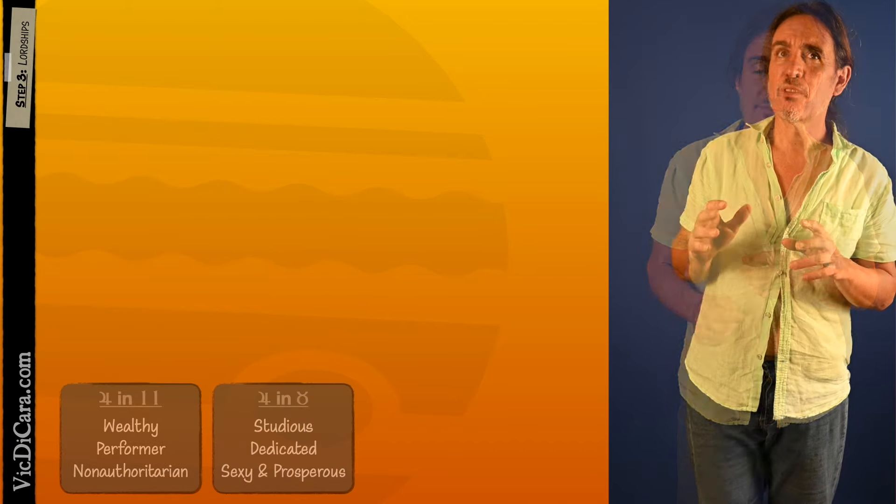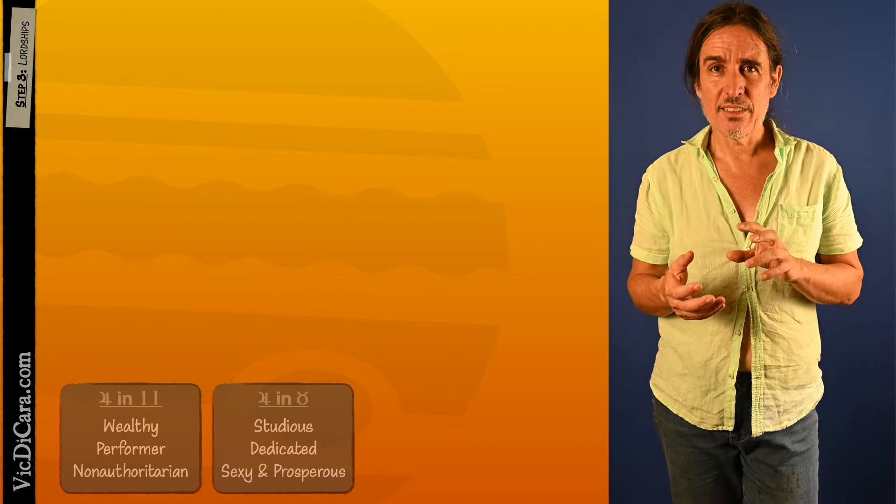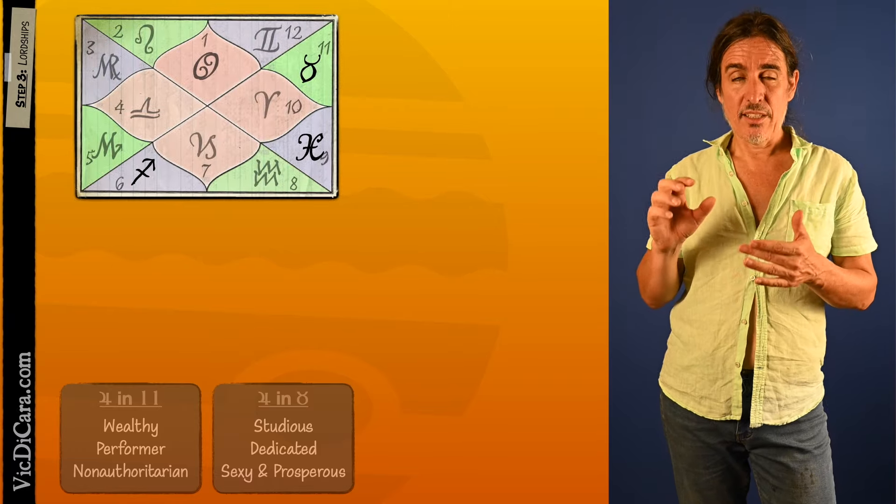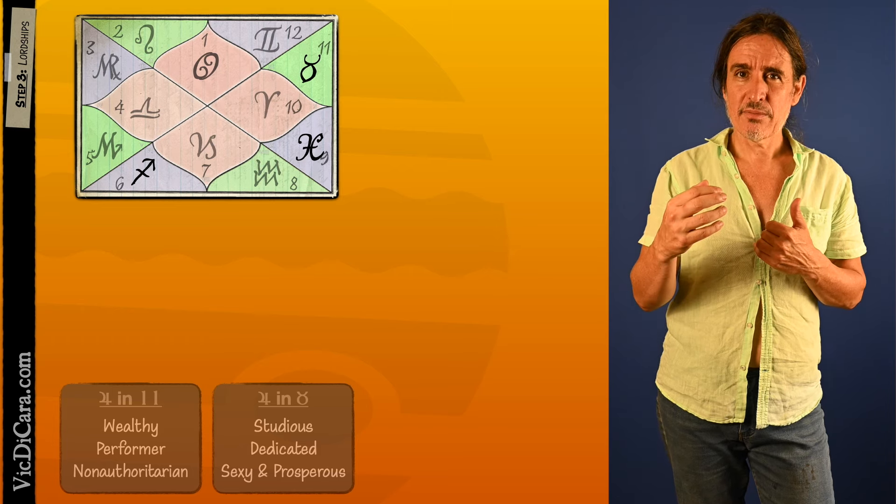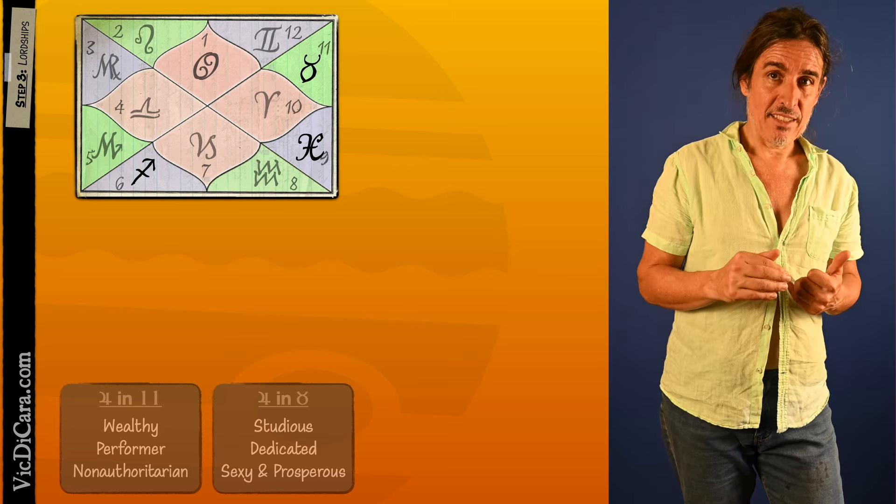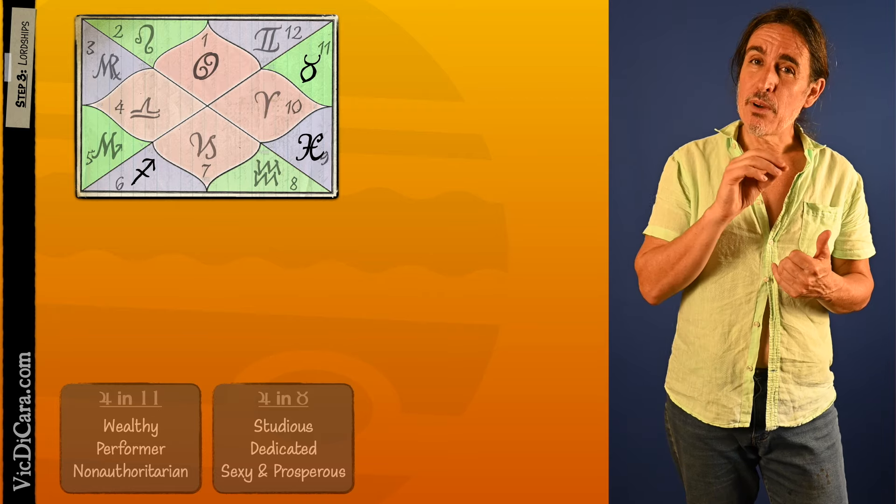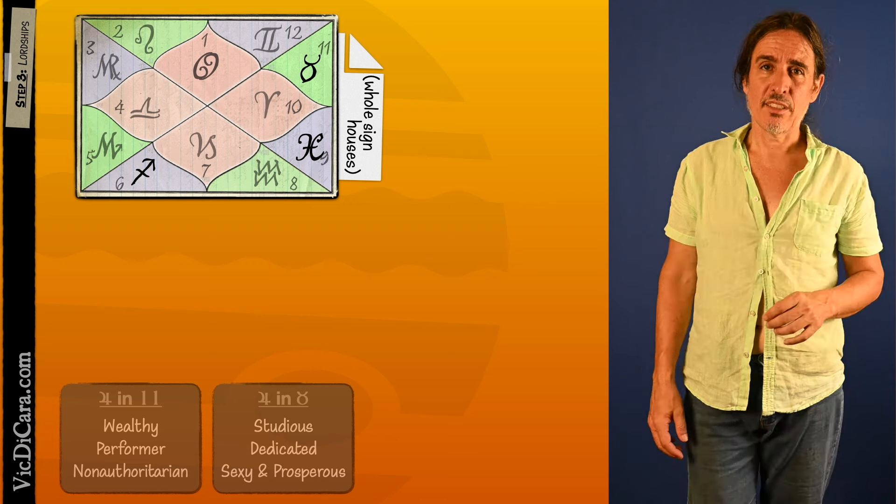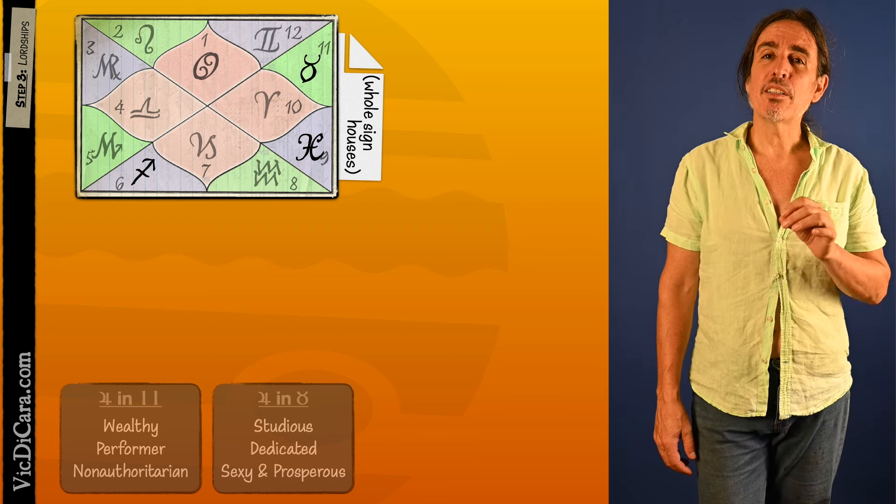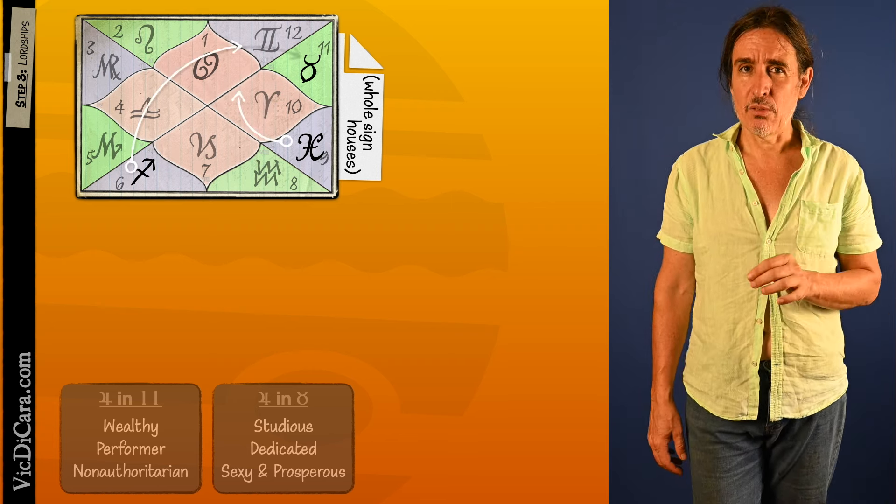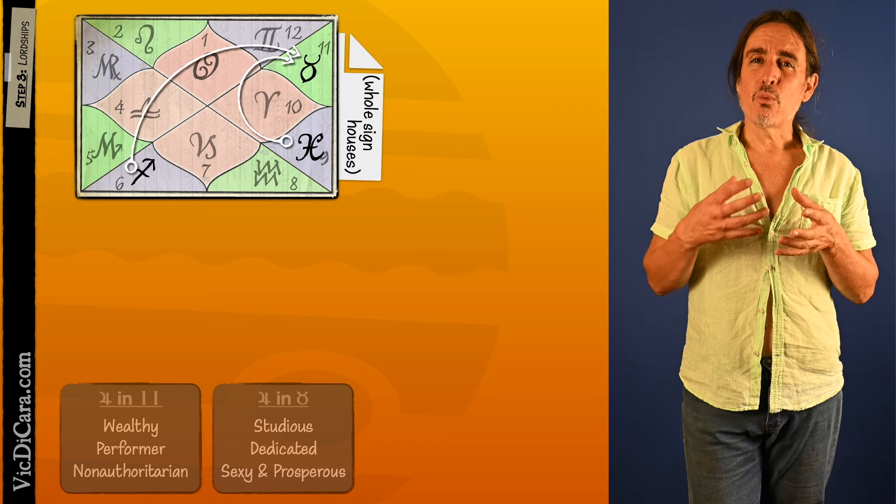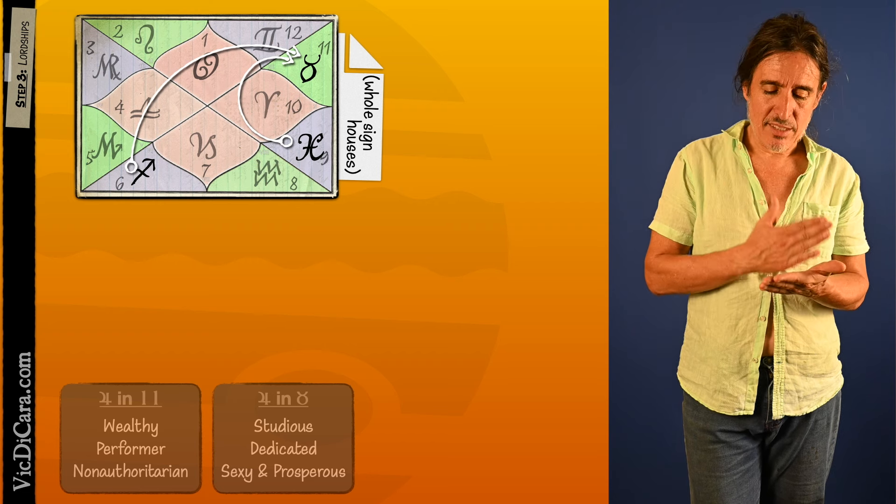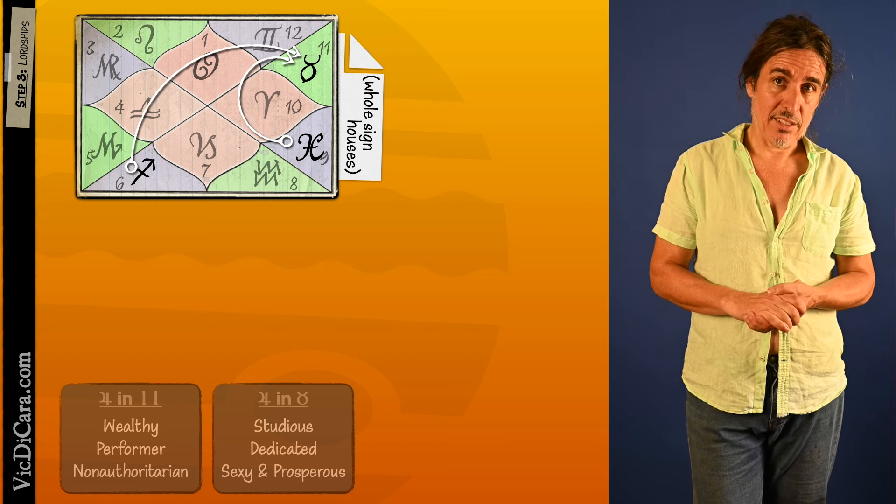Now step three. This step is a little bit more complex but not too difficult. It works like this. If Taurus is the 11th house then Jupiter's signs, Sagittarius and Pisces, must be the sixth and the ninth. So therefore if Jupiter is in Taurus in the 11th house it must be there as the sixth and the ninth lords. So we should mix in the significance of having the sixth lord in the 11th house and the ninth lord in the 11th house.